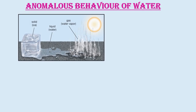What is this anomalous behavior of water? In the picture we can see the conversion of solid phase to liquid phase. This is solid. It is the conversion of solid phase to liquid phase and then from liquid phase to vapor or the gaseous phase. So here there is change in states of matter. The solid phase is ice, liquid phase is water, and the gaseous phase is water vapor.